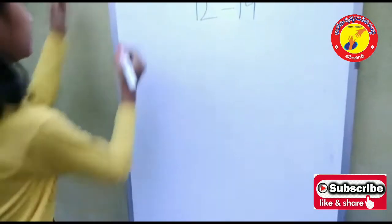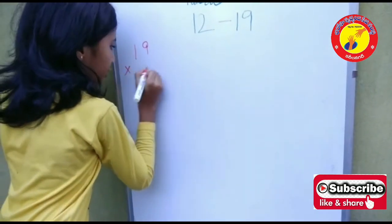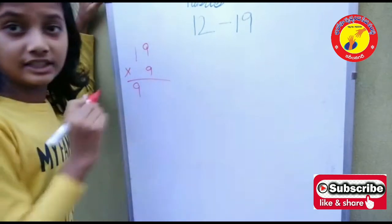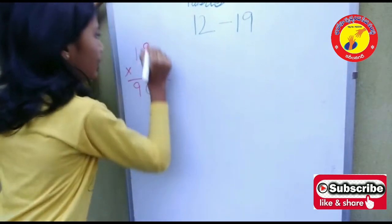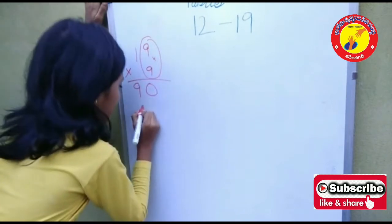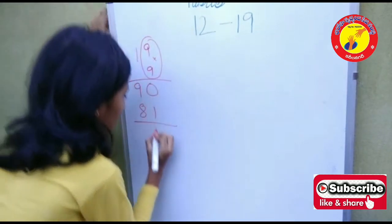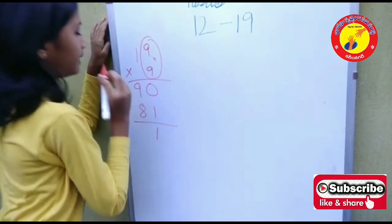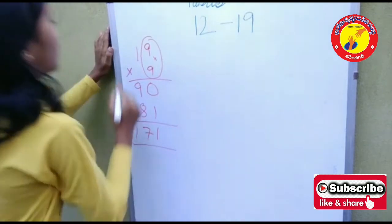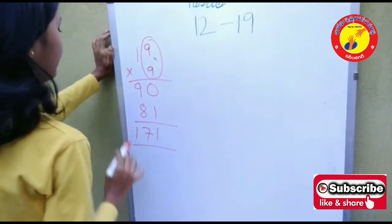Let's see two examples. 19 into 9. I am taking 9 as it is and 0 in the 1's place. Now, 9 9's are how much? Yes, it is 81. Now, 1 plus 0 how much? It is 1. 9 plus 8 is equal to 17. So, 19 into 9 is equal to 171.